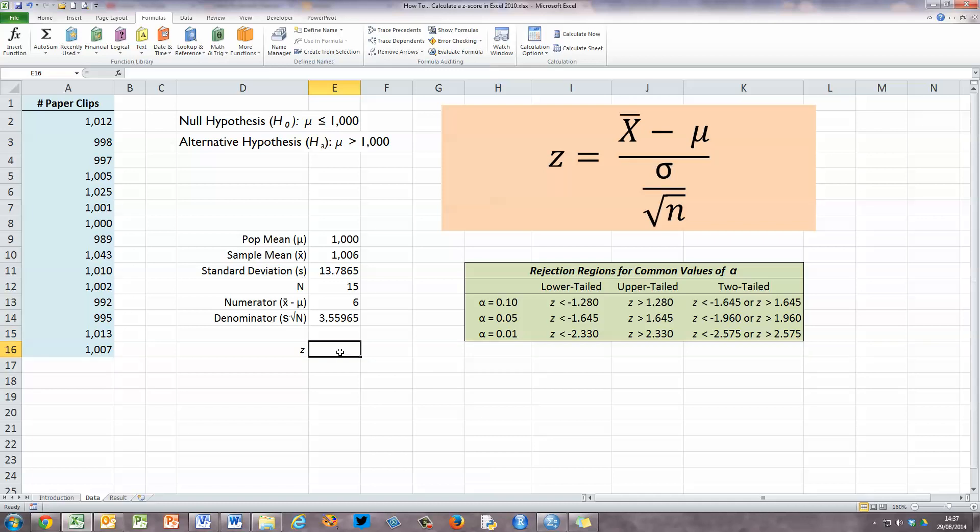So we now have our numerator and our denominator. And just on a separate line down here, I can calculate the z-score, which is simply our numerator, which is 6, divided by our denominator, 3.55. And that gives us a z-score of 1.66683.